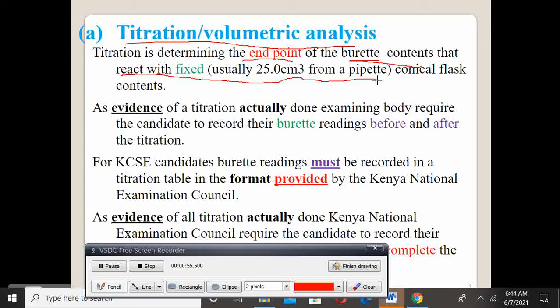So we are determining the end point from burette contents that react with fixed contents in a conical flask, usually it is 25, we also have some pipettes that are capacity is 20.